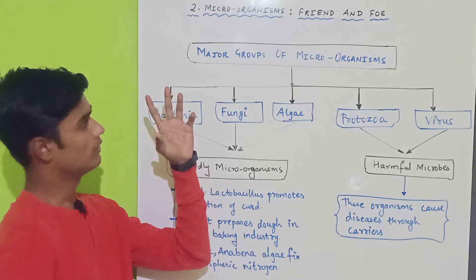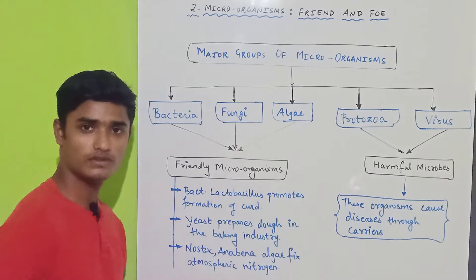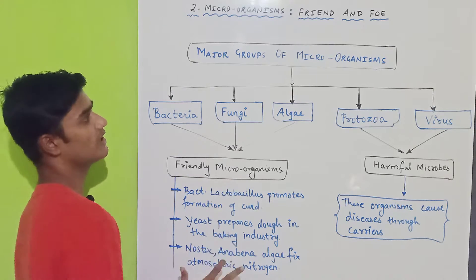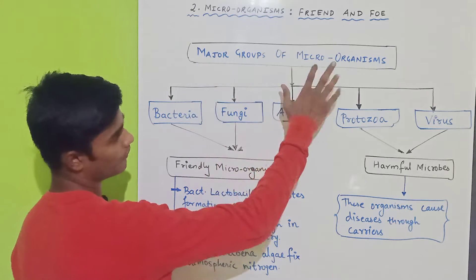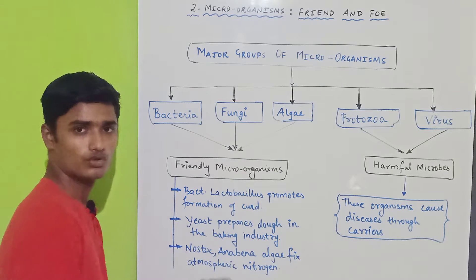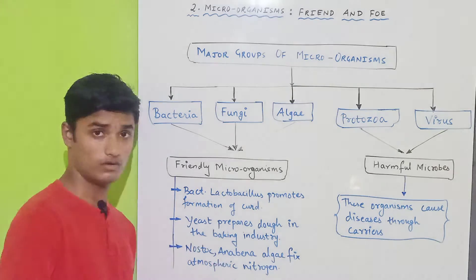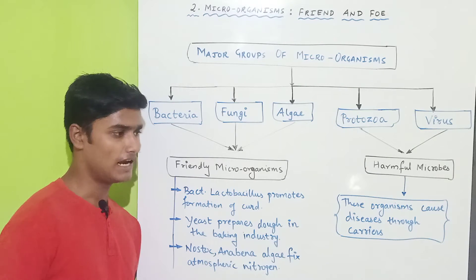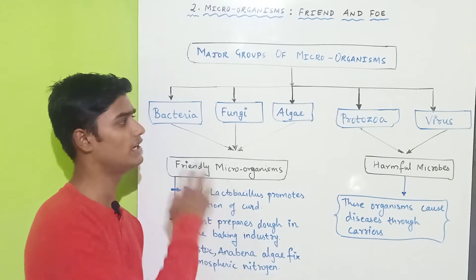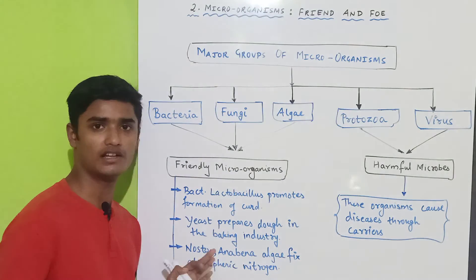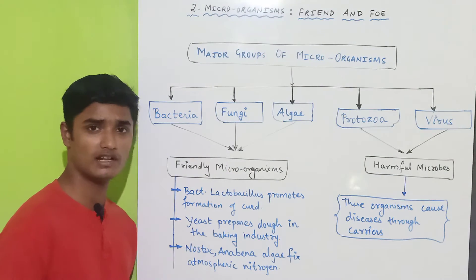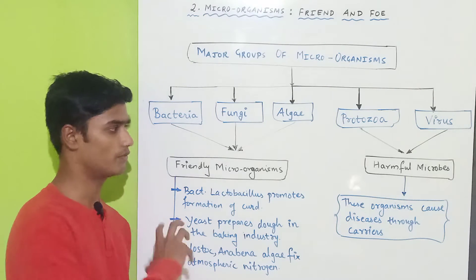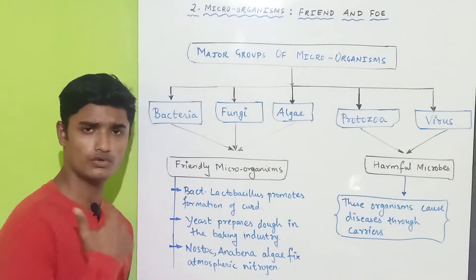This is the skeletal view of the chapter. What I have written here covers the major groups of microorganisms. Millions and millions of microorganisms are there, and we have generally classified them into five general categories. So what are those five categories? We are going to discuss that first.